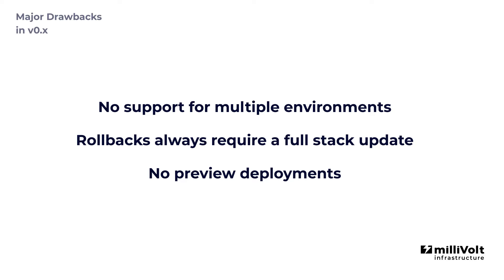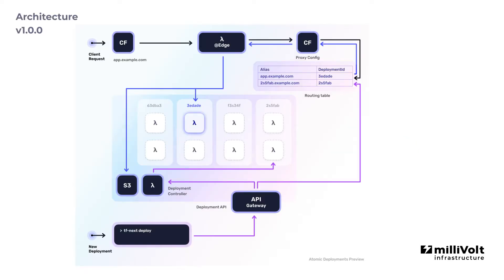So that's why we introduced some fundamental changes to the architecture of this module. In the updated architecture, we have a better separation of global things like CloudFront and deployment resources like Lambda functions. Instead of using Terraform to create the Lambda functions for each deployment, we now use a CDK construct internally which creates a new CloudFormation stack for every deployment. This allows us to create a technically unlimited number of parallel deployments. Each deployment now creates an entry in a routing table, and a Lambda@Edge function is responsible for routing traffic to the correct deployment based on the hostname.